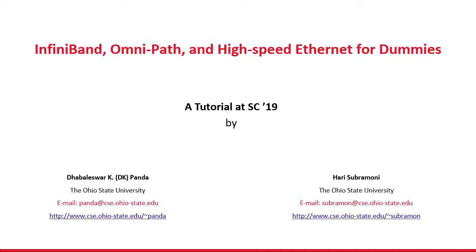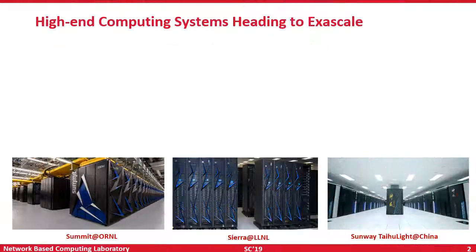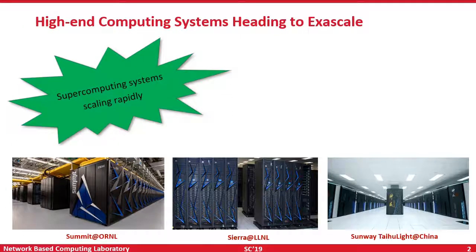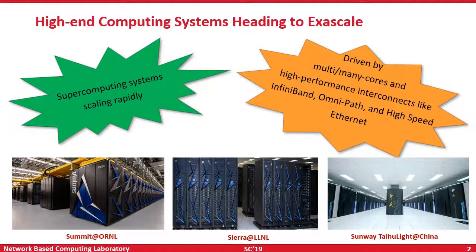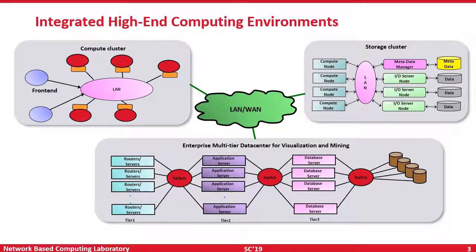The title of this tutorial is InfiniBand, Omnipath, and High-Speed Ethernet for Dummies. As many of you know, we are in a very exciting phase in high-end computing. We already have systems like Summit, Sierra, and Sunway-TaihuLight. These are the top systems in the world these days. We are heading into the exascale era and supercomputing systems are scaling rapidly, being designed with multi-node architectures and high-performance interconnects like InfiniBand, Omnipath, or High-Speed Ethernet.